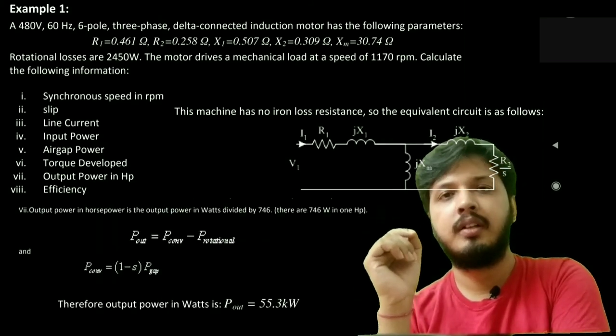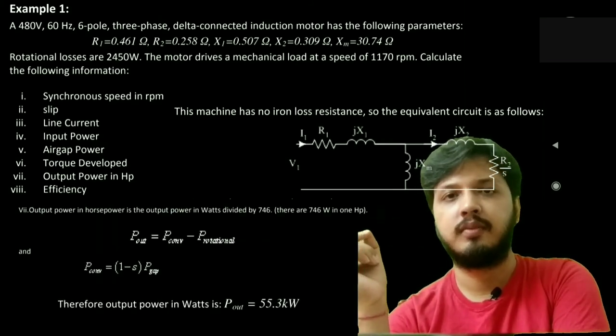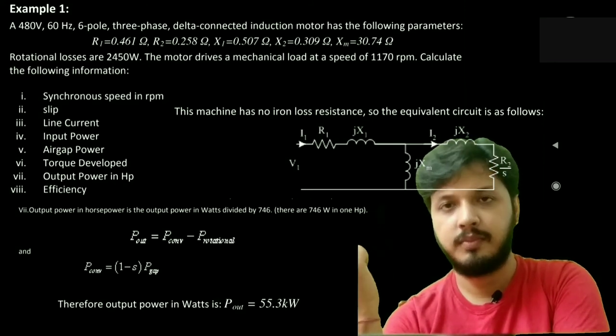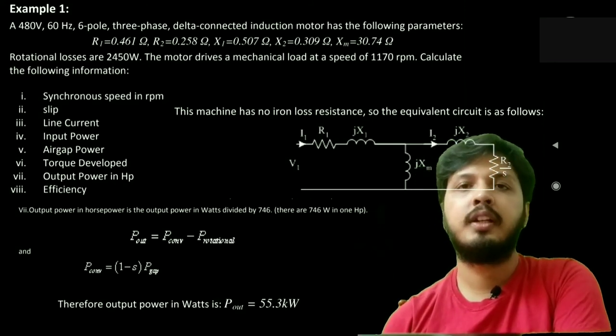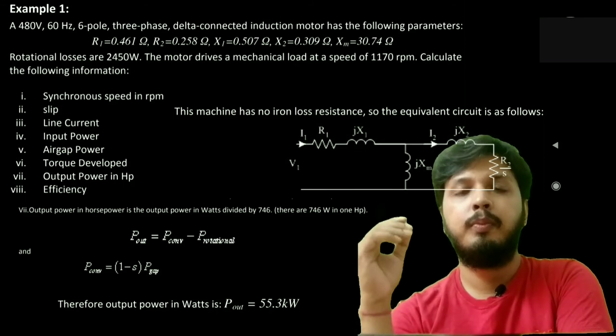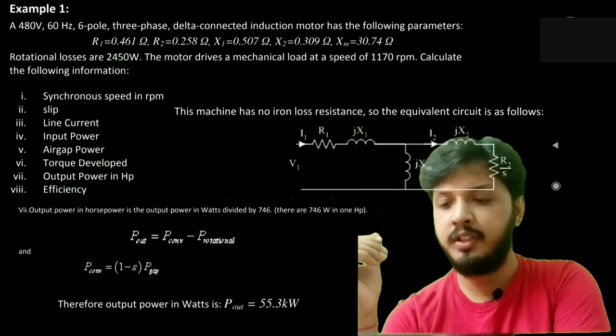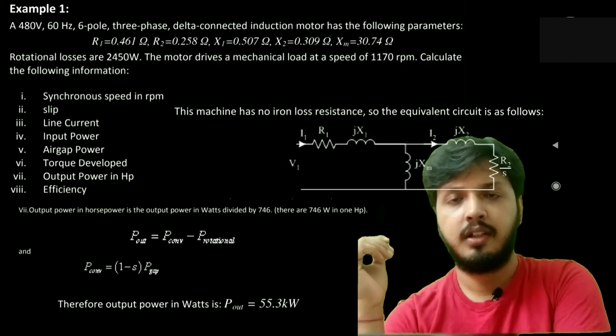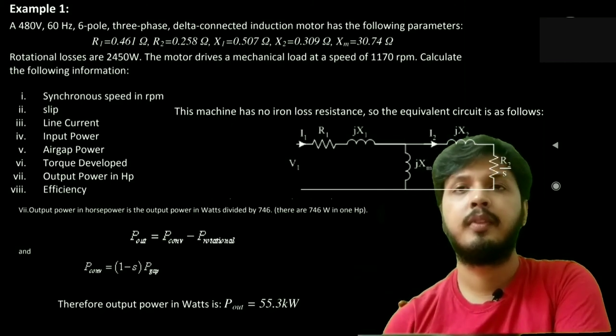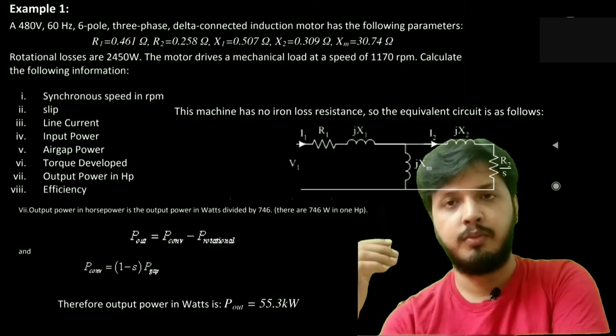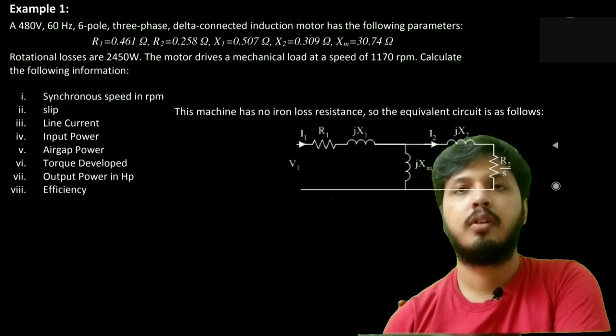Output power is given by PD minus P rotational. PD equals (1 minus s) into PG. Putting all this value, we will get that P output is equal to 55.3 kilowatt. But we need it in horsepower unit. Therefore, we will divide it with 746 and we will get it in horsepower.